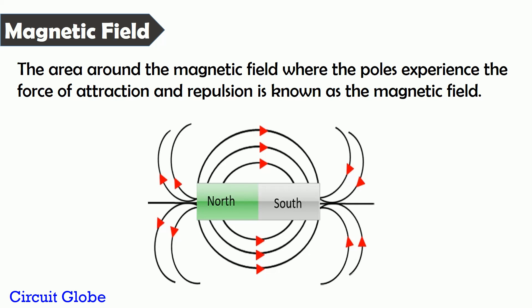First of all, let's understand what is a magnet. Any substance that attracts iron is called a magnet. The force because of which this attraction takes place is called magnetism. In short, it is the property of a magnet because of which it attracts iron.